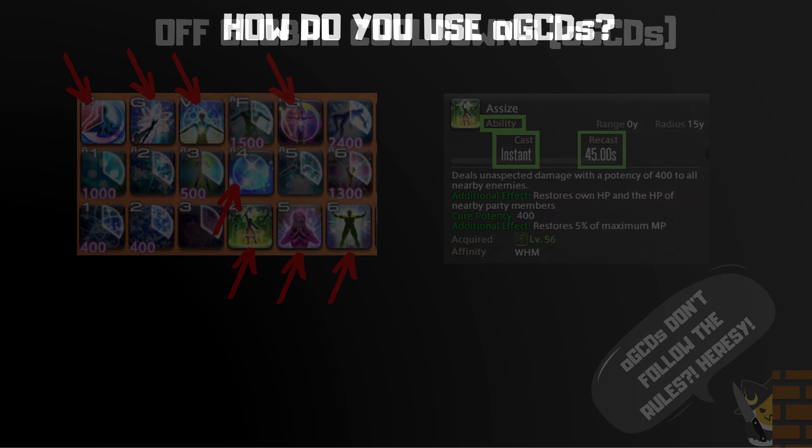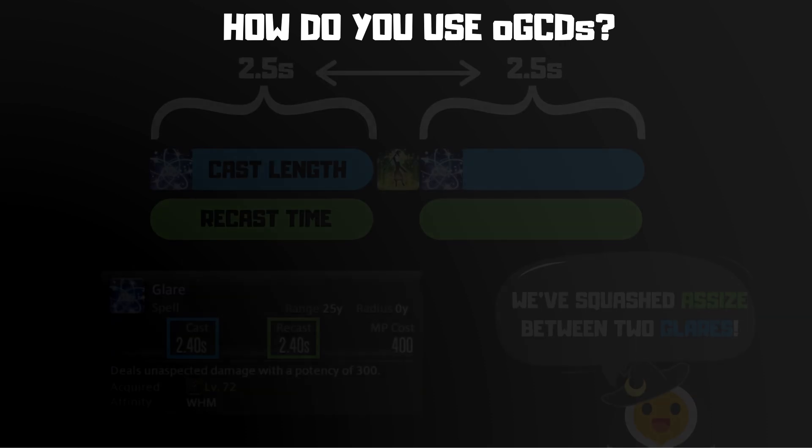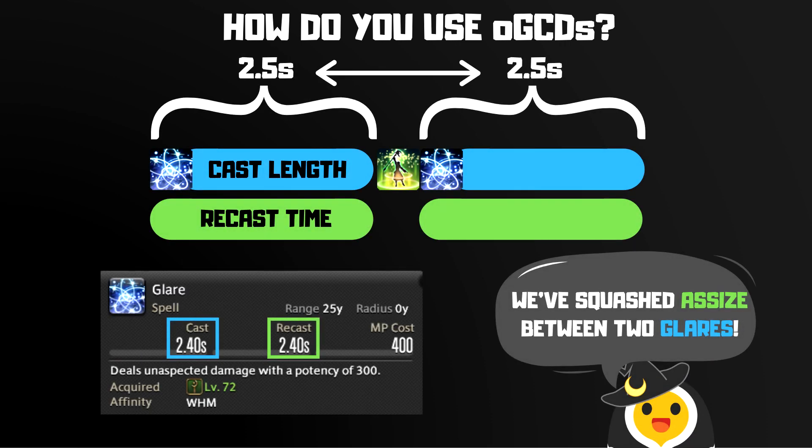So how do you use OGCDs? Well, you can use them pretty much however you want, as long as you're not already busy with another action like casting a spell. For example, you can cast Glare, use Assize, and then cast another Glare. What we've done here is inserted an OGCD between two GCD windows, which pushes the GCD windows apart. However, this isn't necessarily what we want to do.